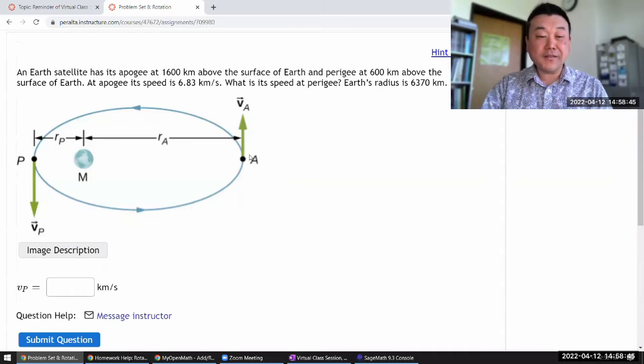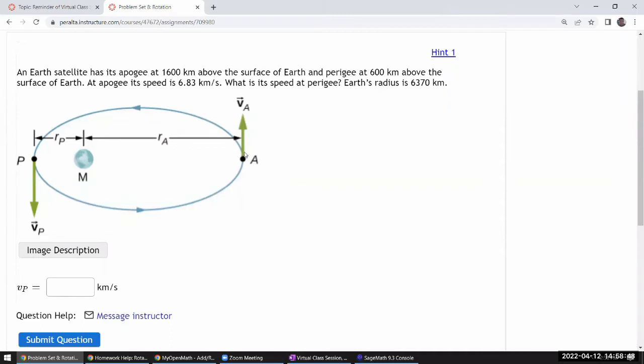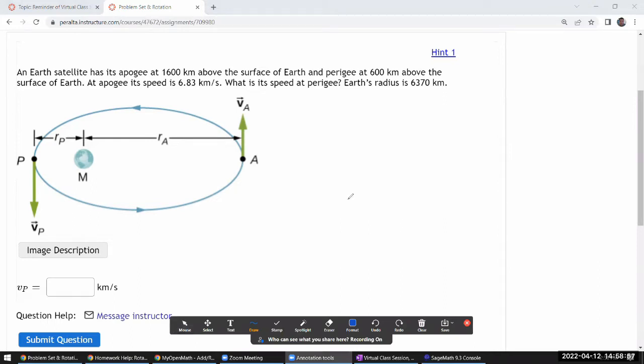It says an Earth satellite has apogee, that's this point A, at 1600 kilometers above surface of Earth. So the way it's giving these numbers, above the surface of Earth, if you're measuring it from center of the Earth, this is supposed to be the distance above the surface of the Earth plus the radius of Earth. So that is my ra.